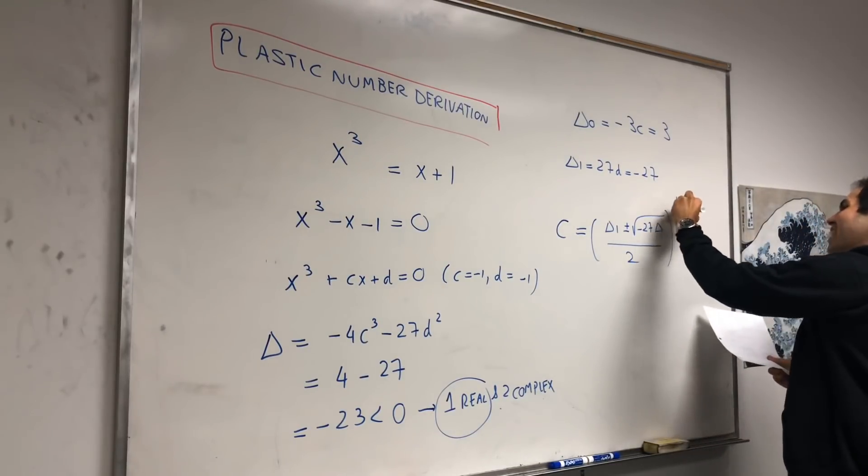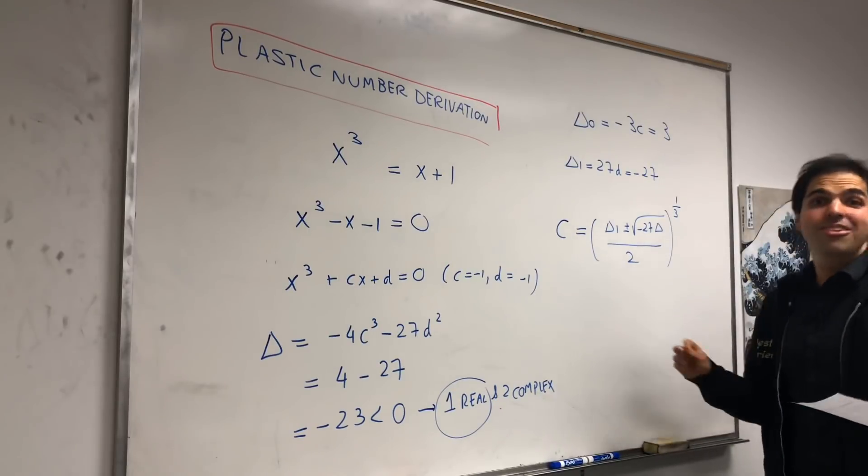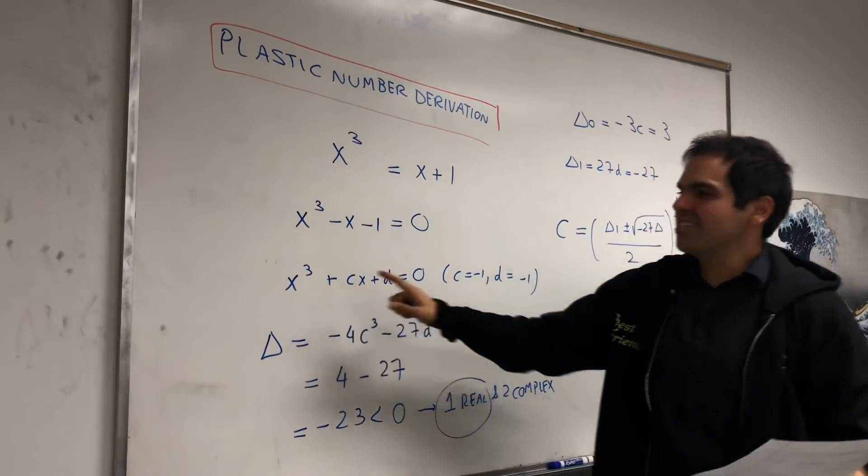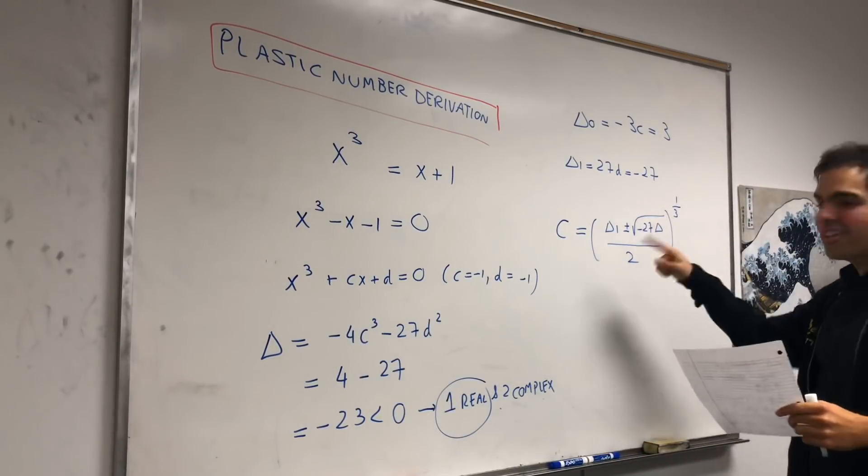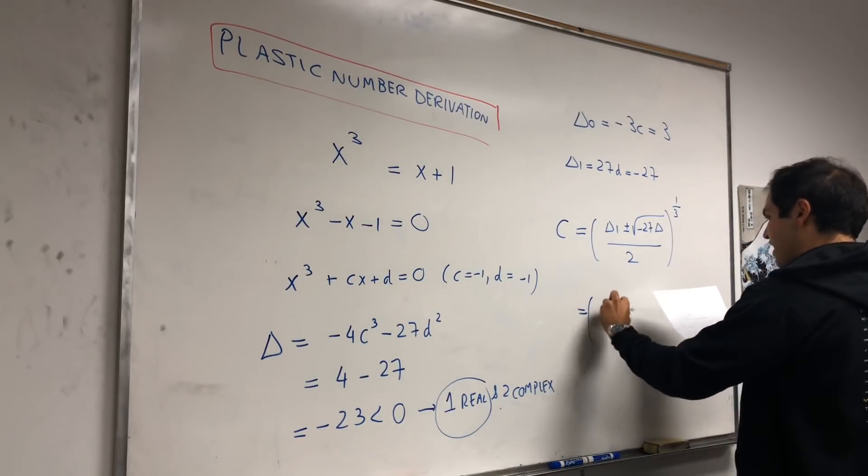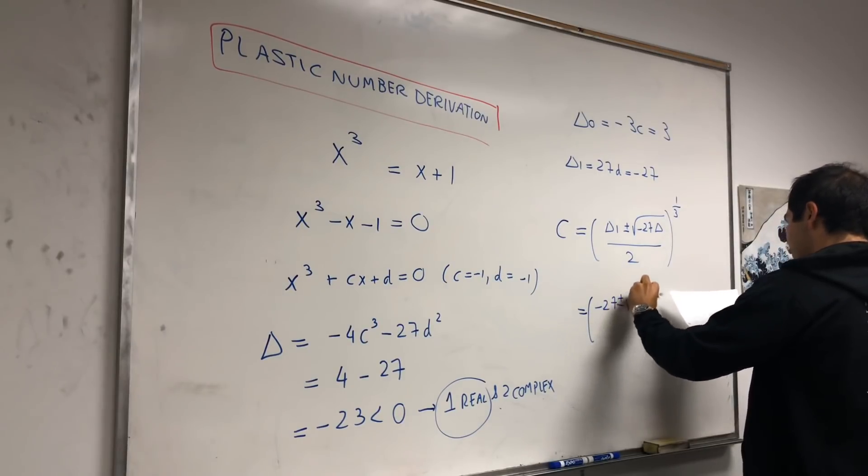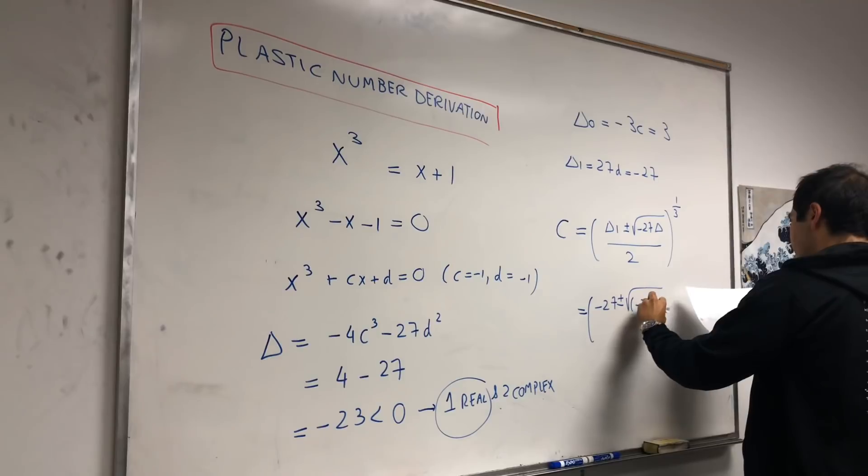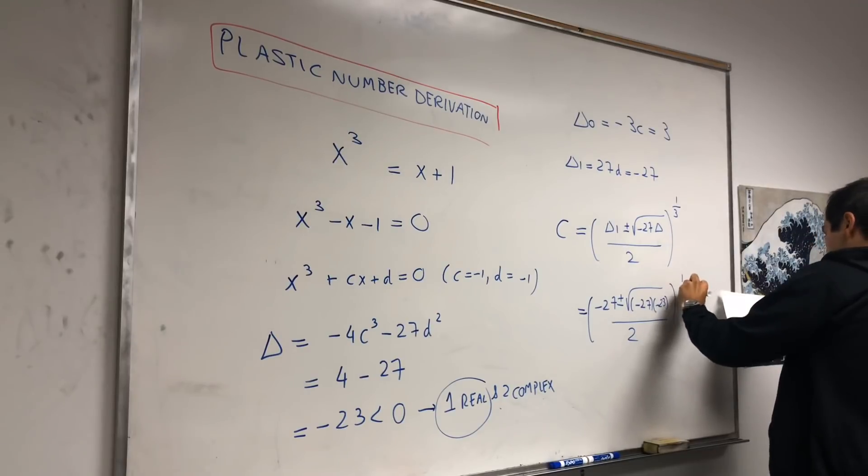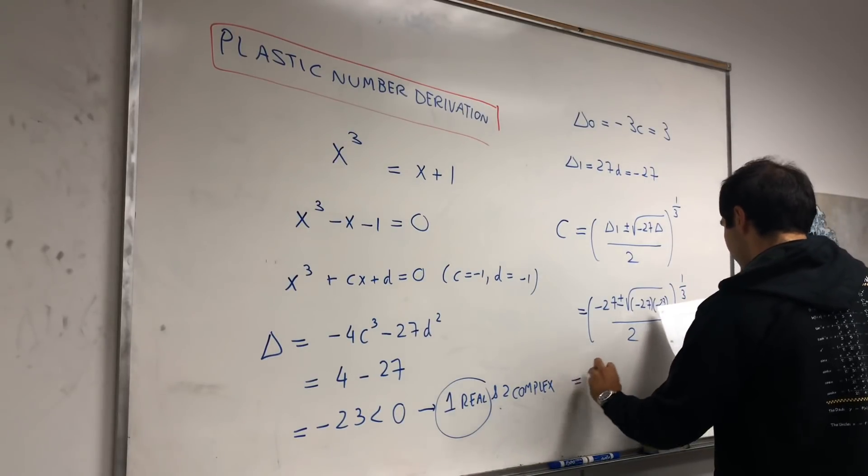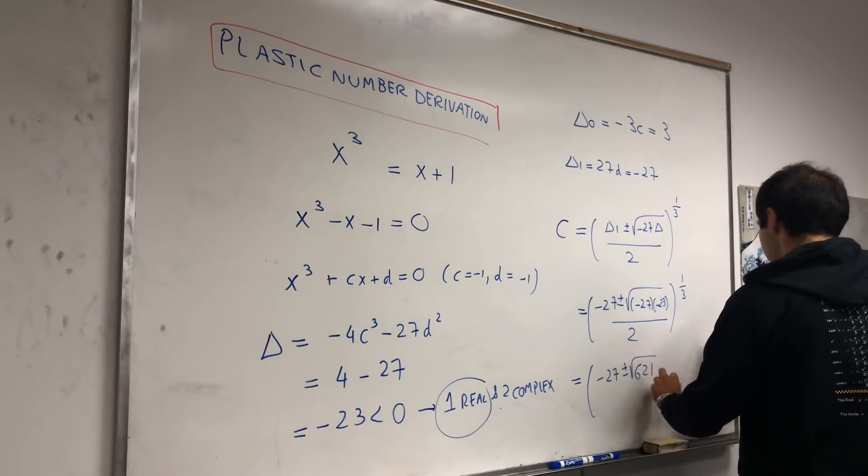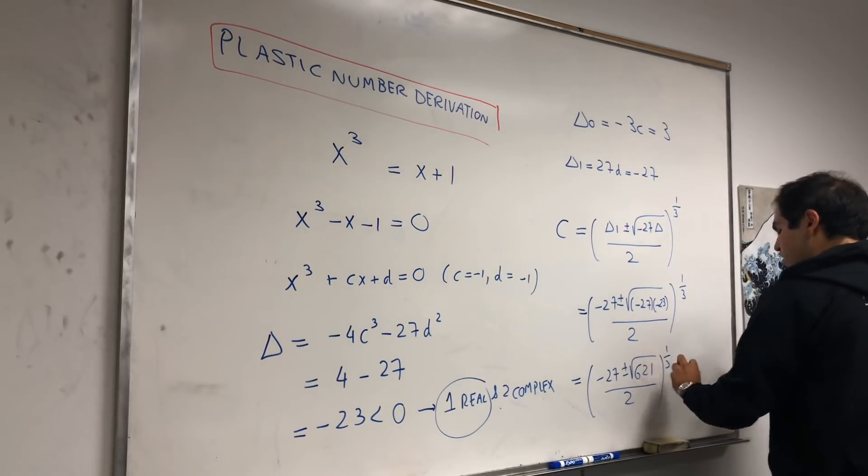I don't know. Where the hell do those come from? I don't know. But I just want to say, here, we're lucky that the x squared term is 0, because otherwise this becomes even more complicated. Okay. Now, let's plug this in. So, this gives us negative 27 plus or minus square root of negative 27 times negative 23 over 2. And you take the cube root of that. And that gives you negative 27 plus or minus square root of 621 over 2, and you take the cube root of that.